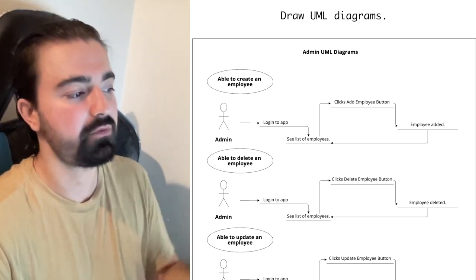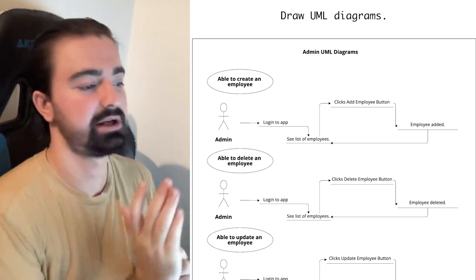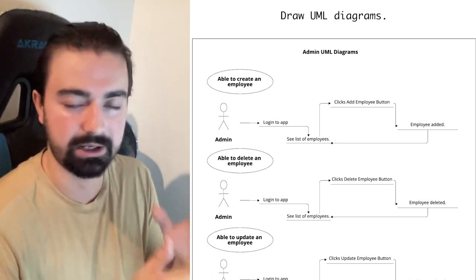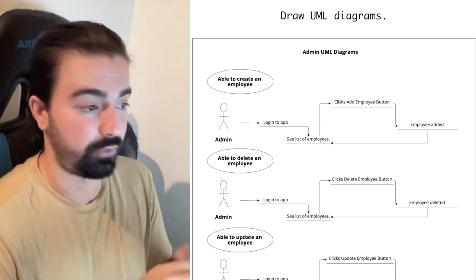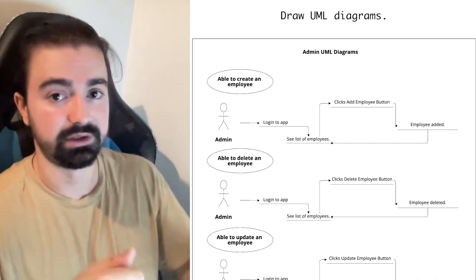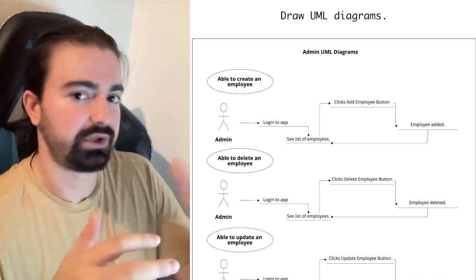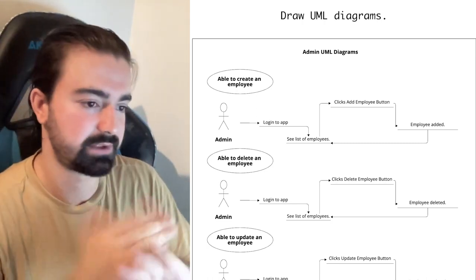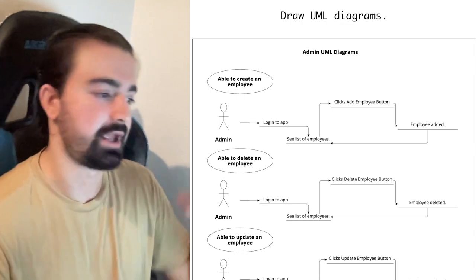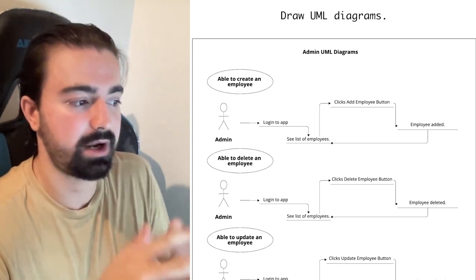For example, admin wants to create an employee: admin logs in to the app, sees the list of employees, clicks the 'Add Employee' button, and the employee is added. Then they go back to see the list of employees. You could add more detail — like if the username/password is wrong, show an error 'your credentials are not correct', go back to the login page, then if authentication is correct, see the list of employees. When they see the list, click the 'Add Employee' button, fill some inputs with front-end validations.